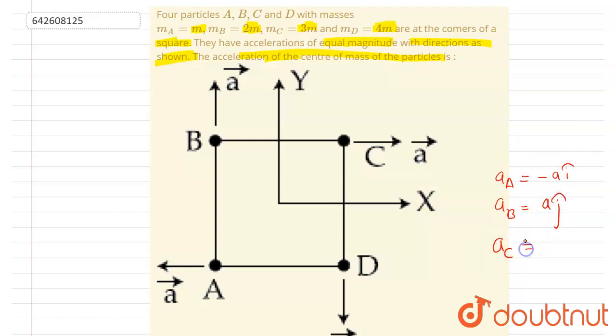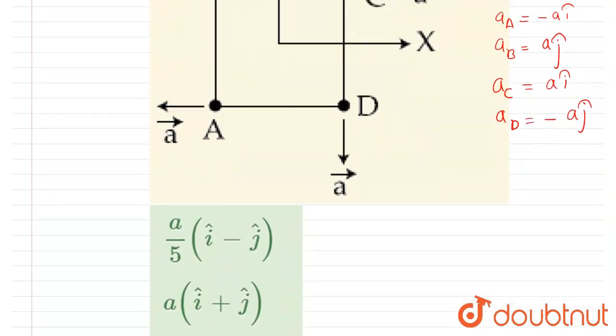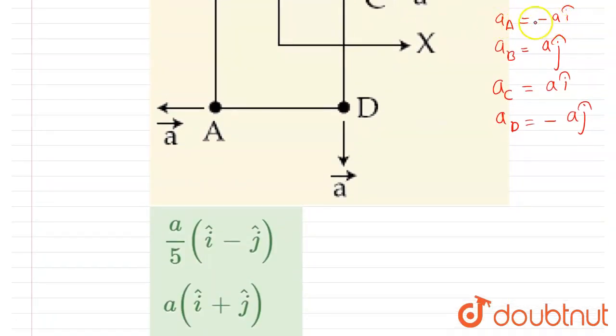Acceleration of D, you can see it is downward, so I will write -a ĵ. And masses are m, 2m, 3m, and 4m, right? So you can just put the values here. The accelerations are these and masses are m, 2m, 3m, and 4m respectively.